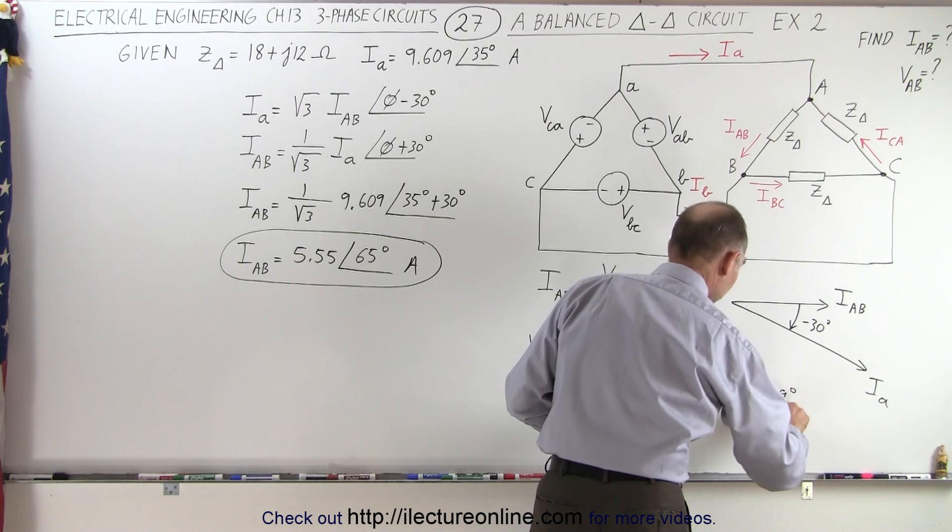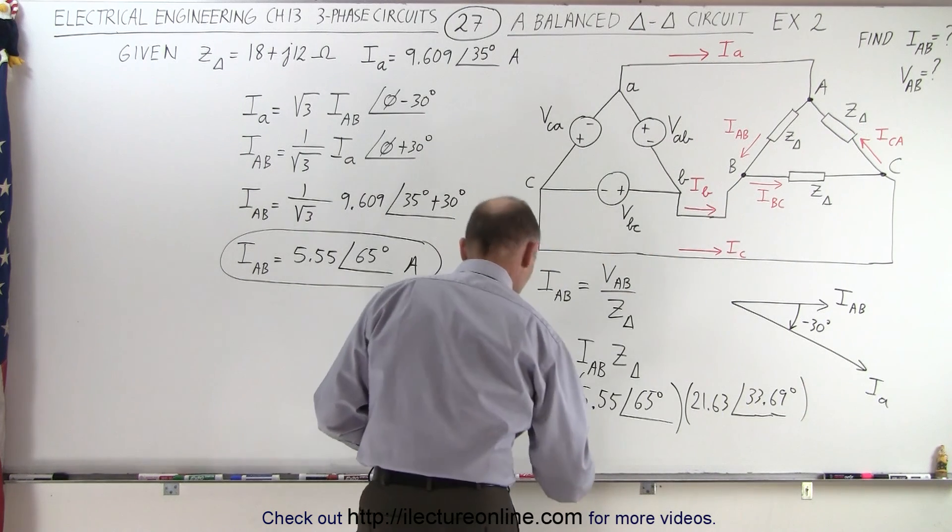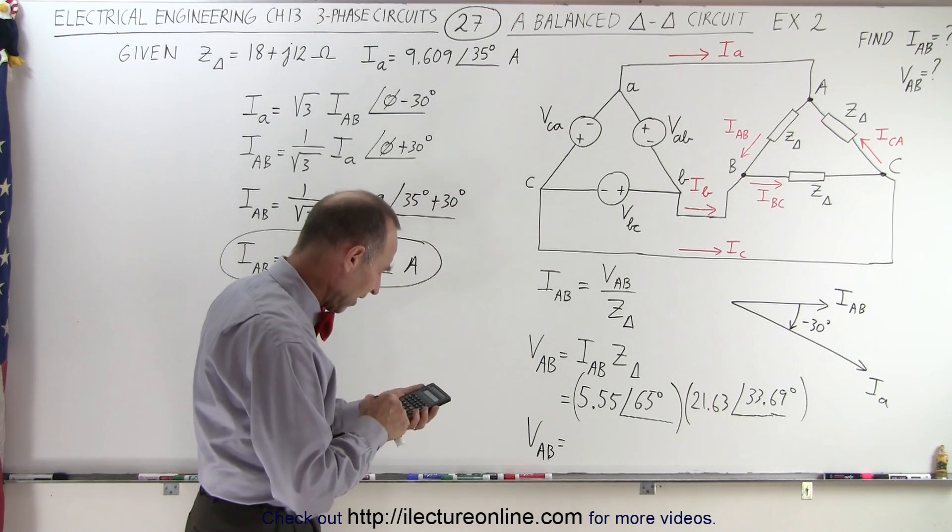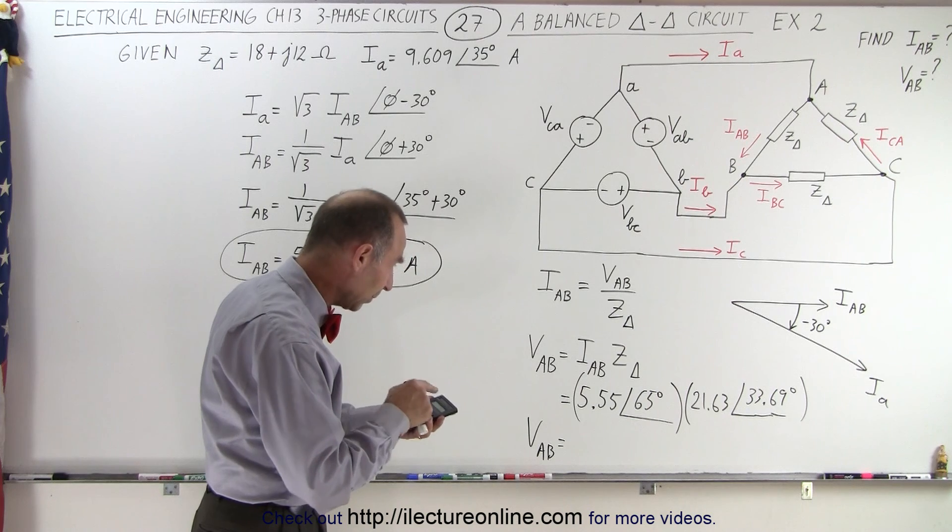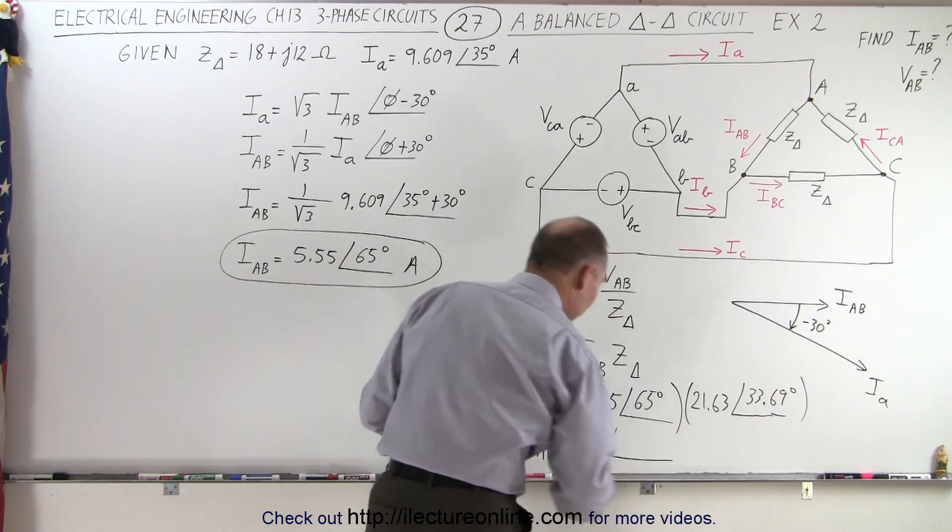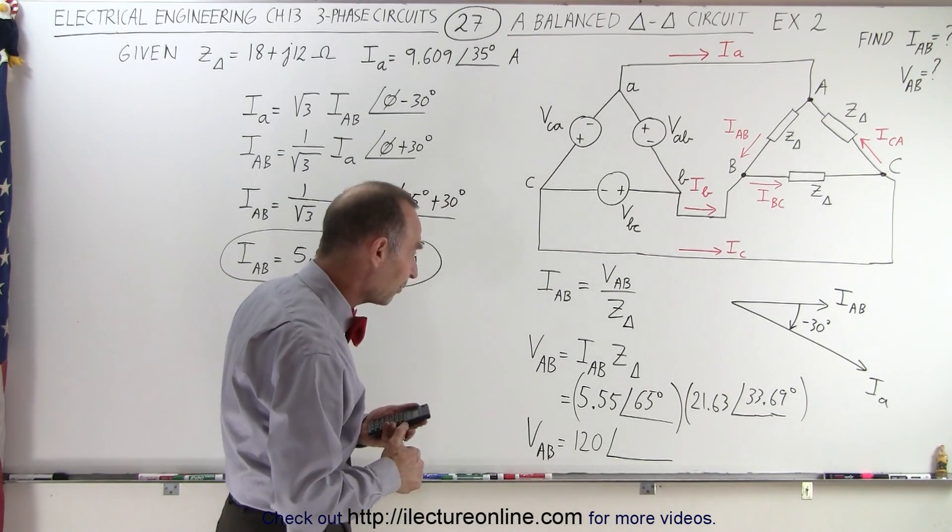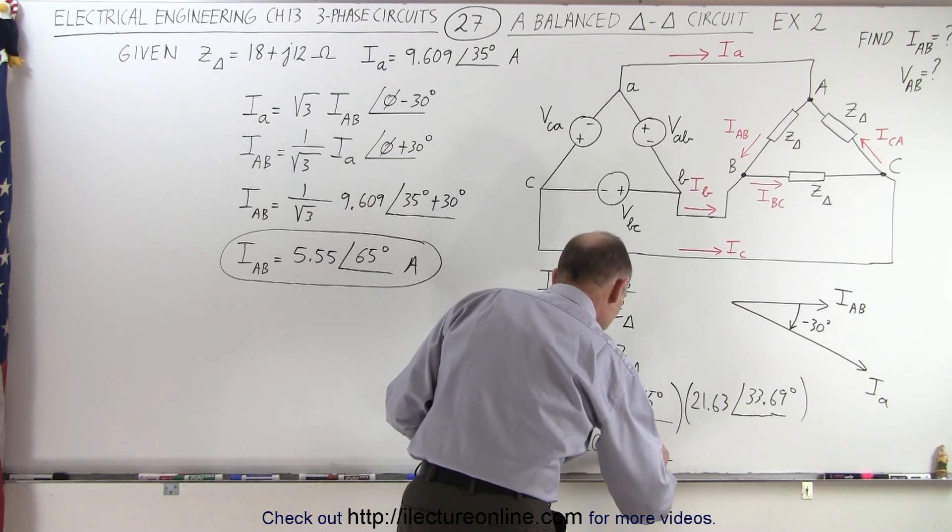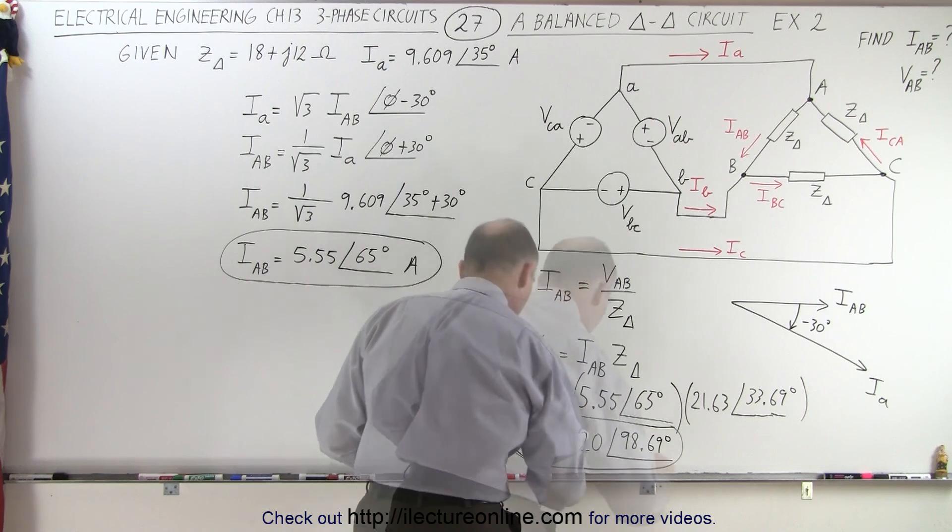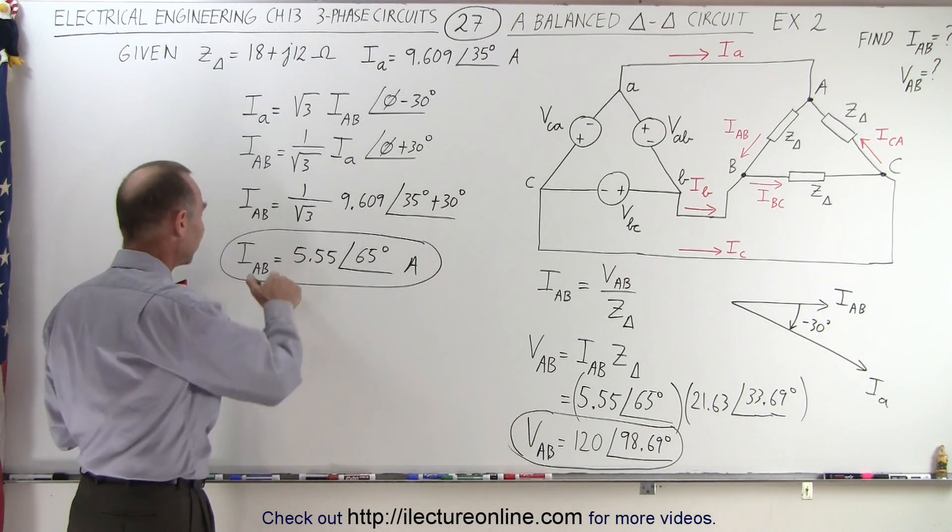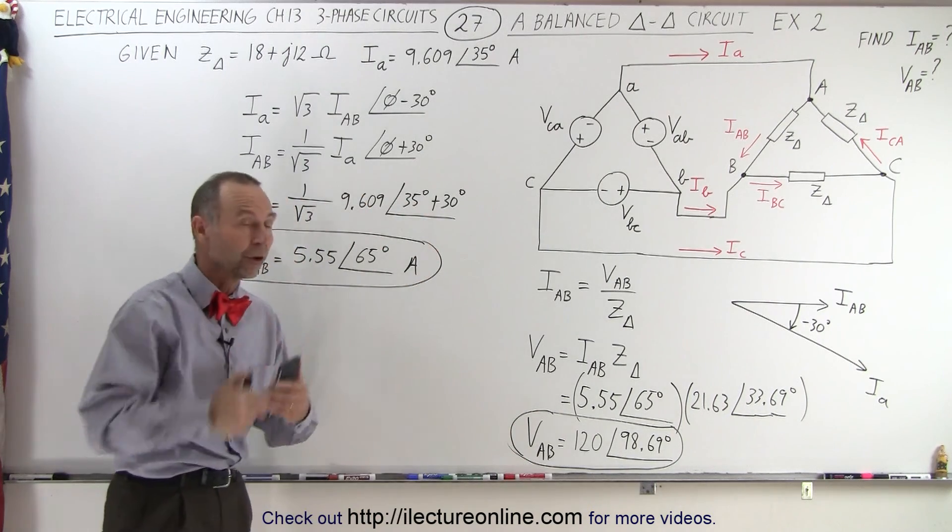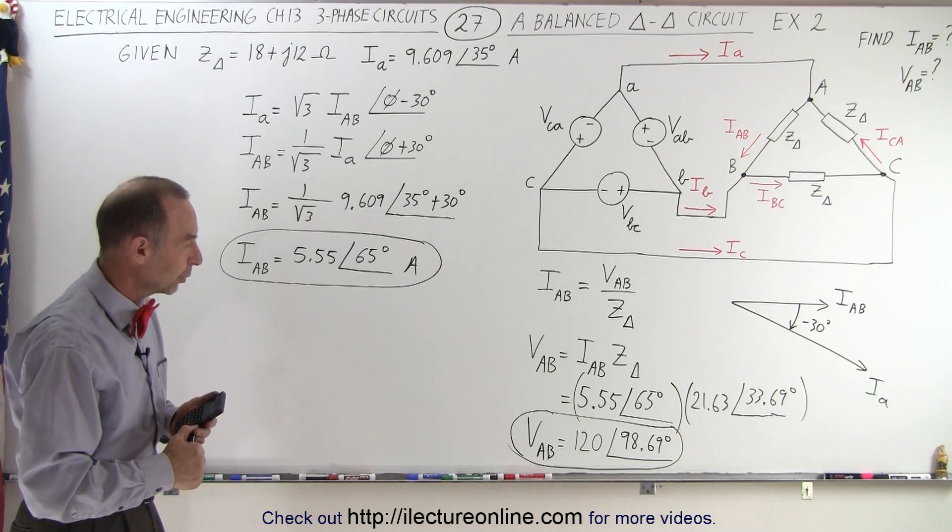33.69 degrees, and now when we multiply those two out, we get VAB is equal to, so we have 5.55 multiply times 21.63, that's a voltage of 120 volts with a phase angle of 65 plus 33, that would be 98.69 degrees. There we go. And so now, we have our phase current through the load impedance, and we have our line voltage, the voltage across each of the branches of the load impedance, and that is how we find that.